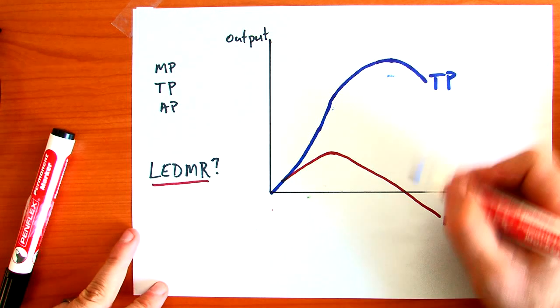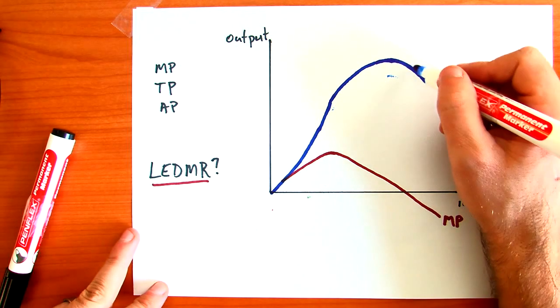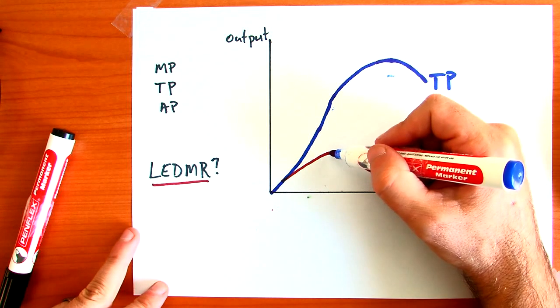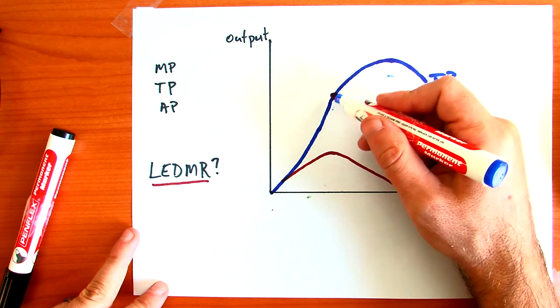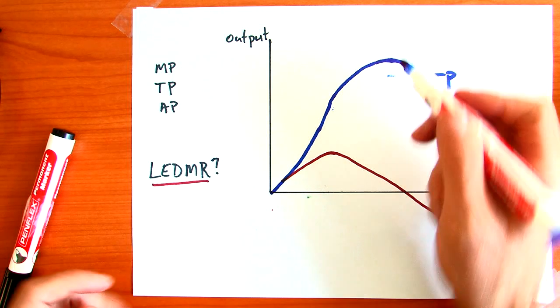So there's correlation here to there, where total production becomes negative, and the top point of marginal production correlates to this inflection point, where the curve becomes less and less steep.